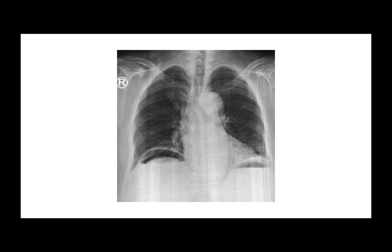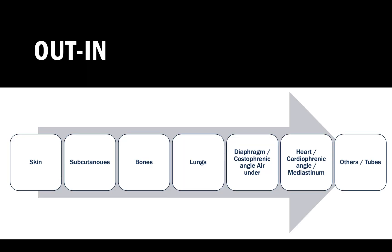Having a system is important for exam purposes, medico-legal purposes, and to identify and not miss anything. From outside-in, you start by looking at the skin, subcutaneous tissue, and bones. Follow the ribs for any fractures. Look at the lung opacities, any black translucent areas, and have a look at the diaphragm - what's below it, the costophrenic angle, whether it's obliterated or not. Then look at the heart, cardiophrenic angle, mediastinum, and any tubes or lines.